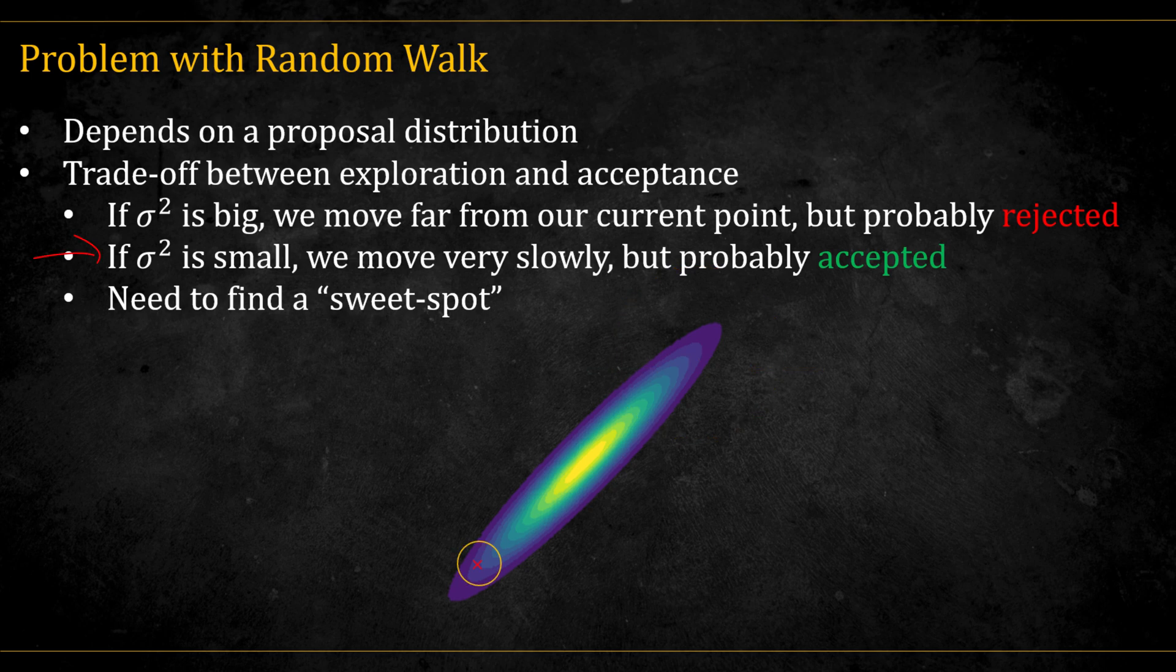If the variance is too small, we accept almost everything, but we creep through the state space at a painfully slow pace. So we're stuck balancing between moving too fast and getting rejected, or moving too slow and not exploring enough. What we need is a sweet spot somewhere in between.